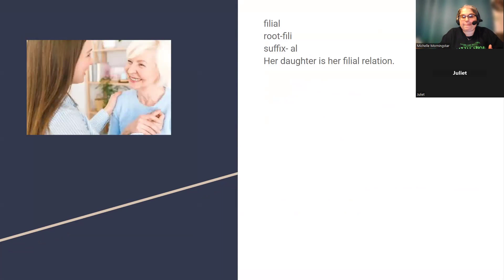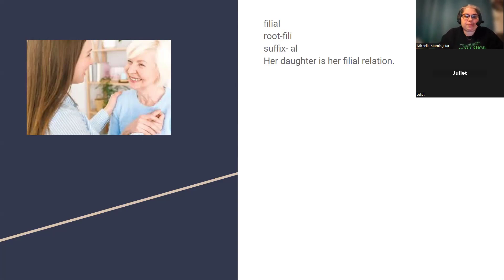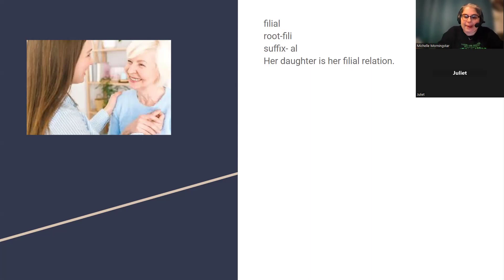My word is filial, and it means having a mother-daughter relation. The root is 'phili' and the suffix is '-al.' My sentence was: her daughter is her filial relation. Can you tell me what the suffix '-al' means? Is it state, condition, act? Yes, it's a state or condition. So when you put that together, what's your sentence saying? She is like her mother — she has a relationship like a mother-daughter relationship. Very good.